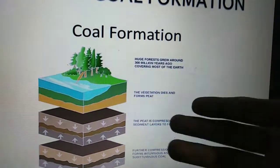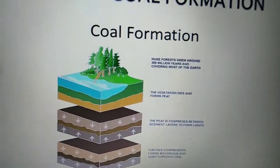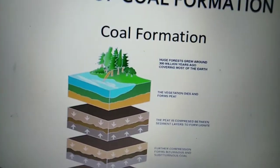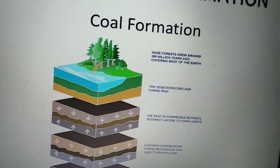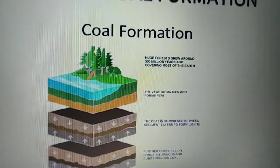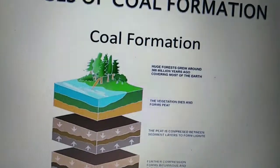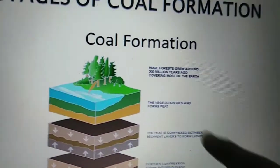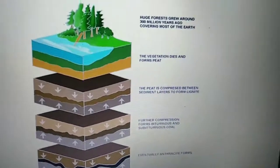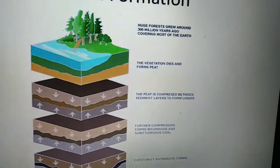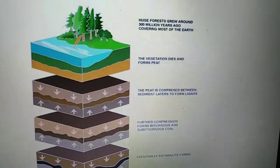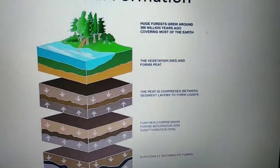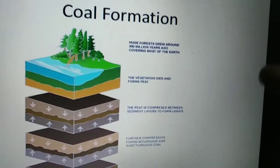Next, the vegetation dies and forms peat. The vegetation here refers to animals, trees, plants, small grass — everything obviously dies because of the swamp, and this forms the first layer, which is peat.